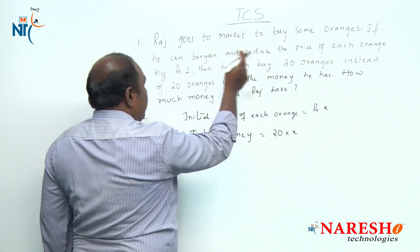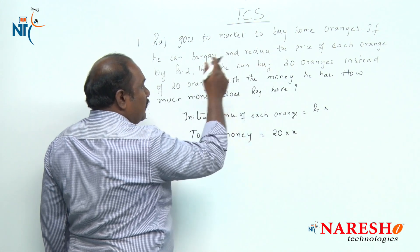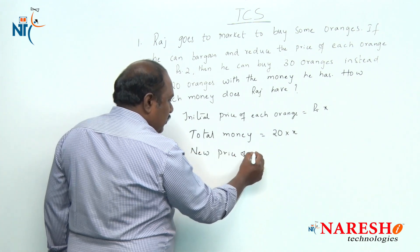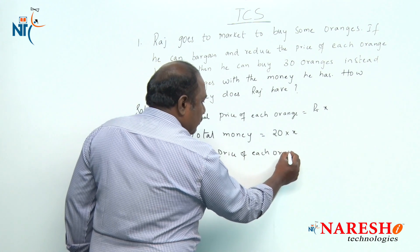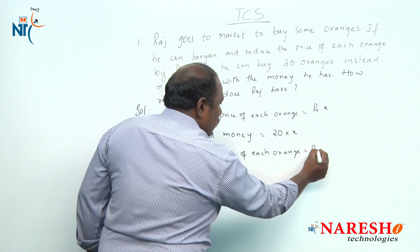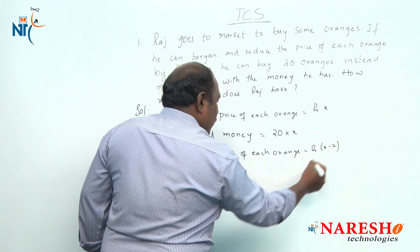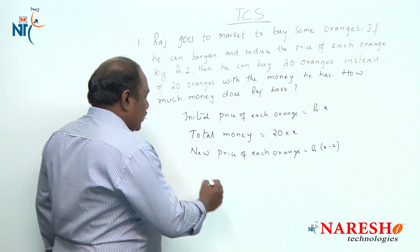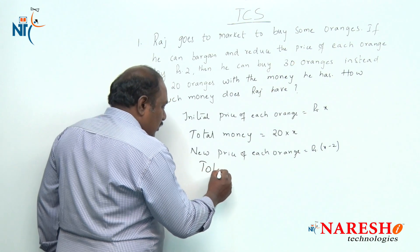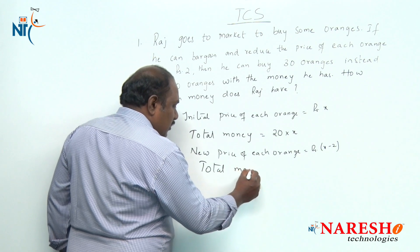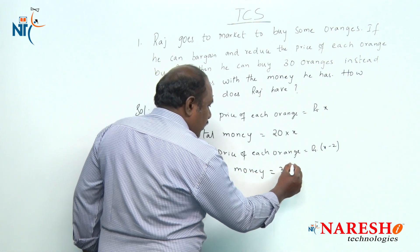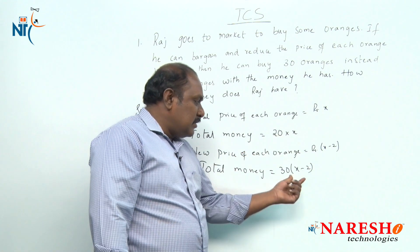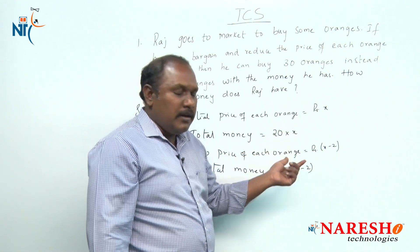The condition is: if he can bargain and reduce the price of each orange by rupees 2, then the new price of each orange after bargaining should be equal to x minus 2. Then the number of oranges he can buy is 30. So what is the total money spent? The total money spent should be equal to 30 into (x minus 2). This is also the total money, so both should be equal.